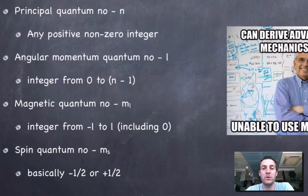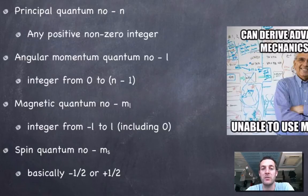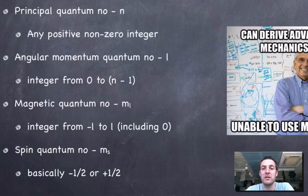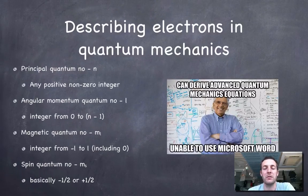An electron will have a principal quantum number n, and this can be any whole number greater than zero. It will have an angular momentum quantum number l, which can be any whole number from zero to n minus one. So if its principal quantum number was two, it could have an angular momentum quantum number of naught or one, but not two. An electron will also have a magnetic quantum number ml, which can be any whole number from minus l to l. So if my angular momentum quantum number l was one, then I could have a magnetic quantum number of minus one, zero or one. And my spin quantum number ms is always going to be minus a half or plus a half, and this basically tells us which way an electron is spinning in an orbital.